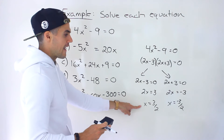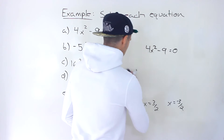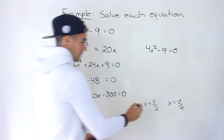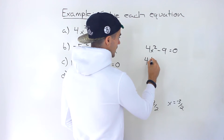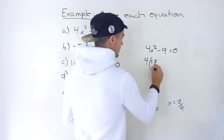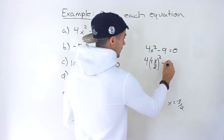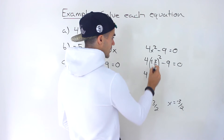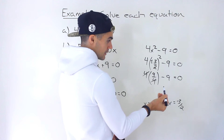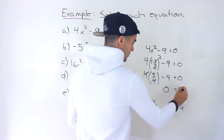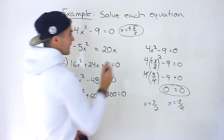You can also check your answer. If we plug in plus or minus 3/2, whether it's positive or negative it gets squared so it ends up positive. We get 4 times (±3)² over 2² minus 9 equals 0. That's 4 times 9/4 minus 9, giving 9 minus 9 equals 0. Left side equals right side, so x equals plus or minus 3/2 is the solution for part A.